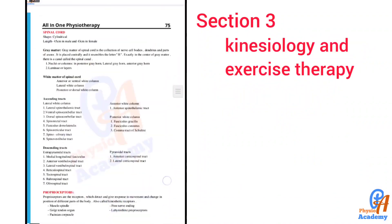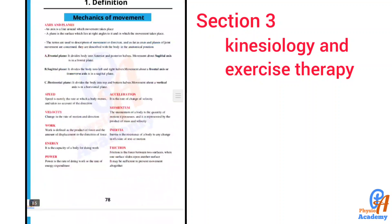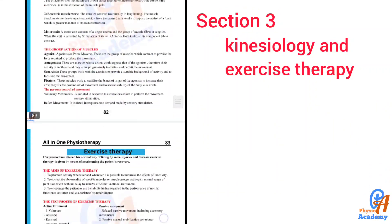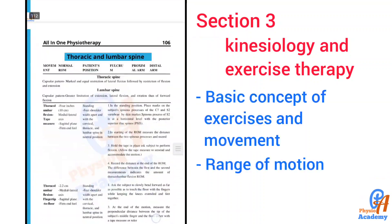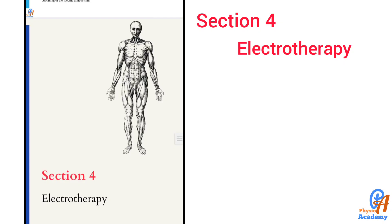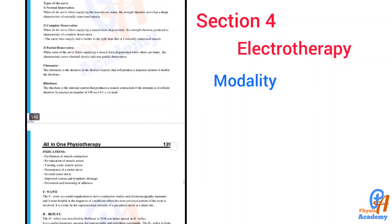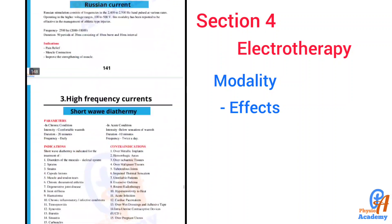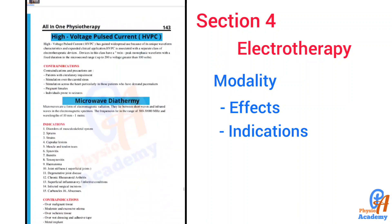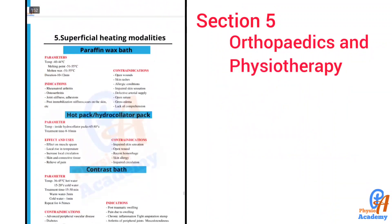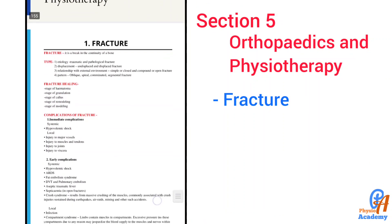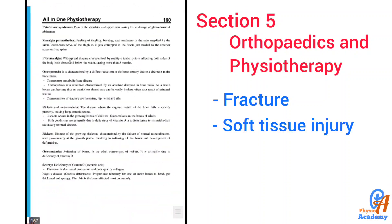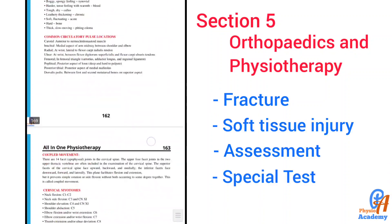Section three covers all topics of kinesiology and exercise therapy, including basic concepts of exercise, movement, and range of motion. Section four is for electrotherapy, covering all modalities, their effects, indications, uses, and contraindications. Section five is for orthopedic physiotherapy, which includes fractures and soft tissue injuries, their assessment, and special tests.